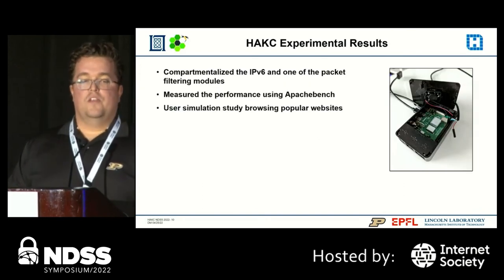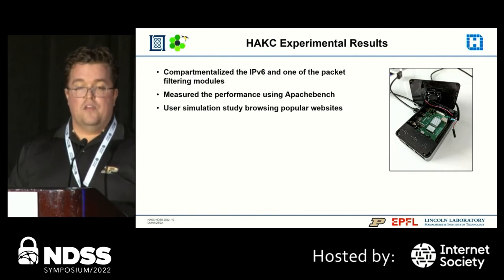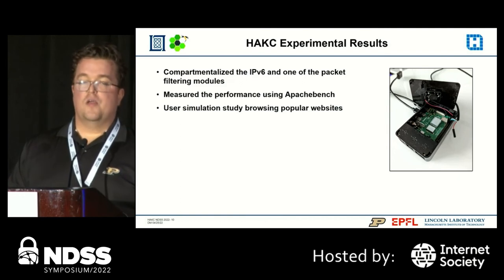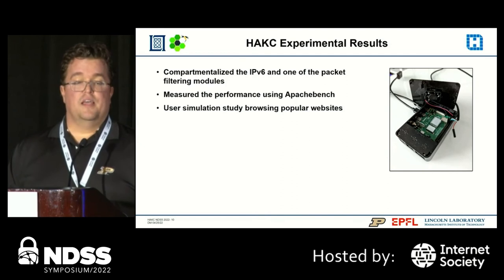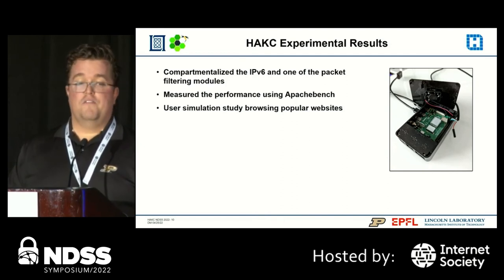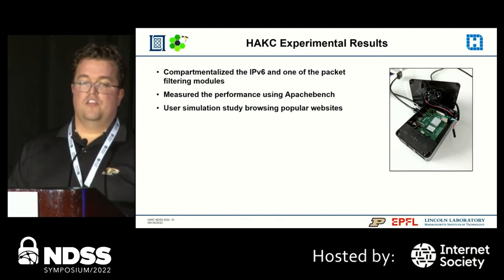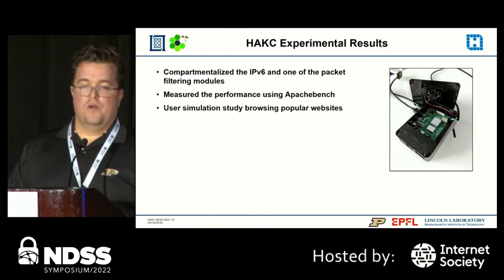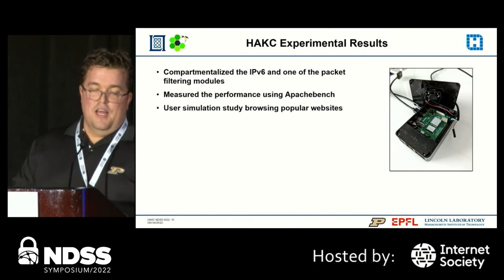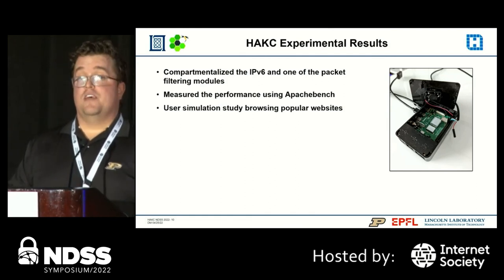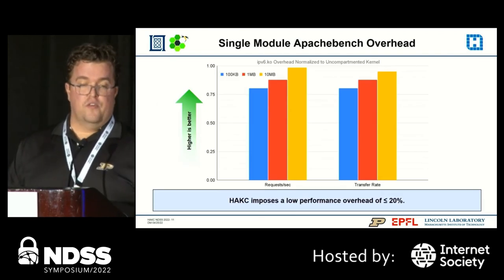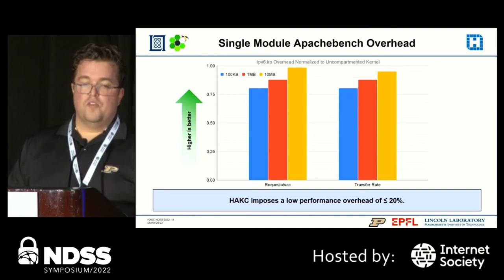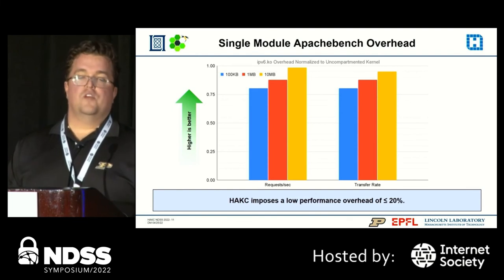To evaluate HACKS, we wanted to measure the overhead induced by compartmentalization and whether users would notice when they are using a compartmentalized system or not. To that end, we compartmentalized the Linux IPv6 kernel module in one of the Linux packet filtering mechanisms. We measured the overhead induced when transferring various sized files using Apache Bench, where the IPv6 module was running alone and with the packet filtering module running alongside. All experiments were done using a Raspberry Pi 4 pictured here. As no hardware exists that actually implements PAC and MTE, the instructions were replaced with instruction analogs. This chart plots the requests per second and the transfer rate the compartmentalized IPv6 module achieved, normalized to an uncompartmentalized module. The overhead ranges from 2% to 20%, with the highest overhead coming when transferring the smallest file.